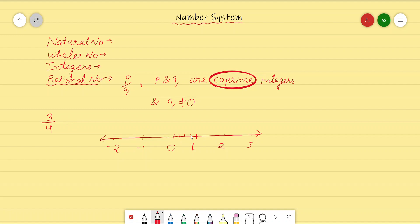So if I divide it into four parts: 1, 2, 3, 4. The first one will represent 1 by 4, this will represent 2 by 4, and this will represent 3 by 4. This is how we can represent this on the number line.